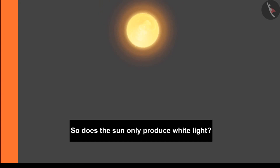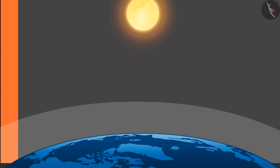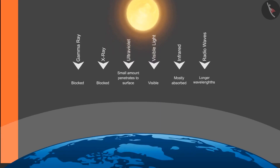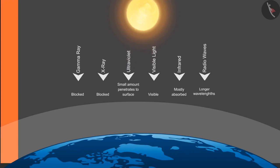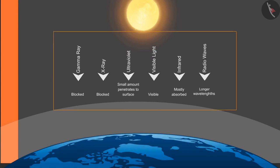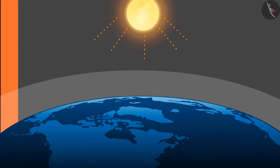Does the sun only produce white light, or is there something else we cannot see? Yes — electromagnetic waves produced by the sun range from radio rays to gamma rays. Every wave has its own wavelength. Some get stopped in the atmosphere and some reach the earth. We can only see the spectrum of visible white light with our naked eyes, and we will read about these waves in detail in higher classes.